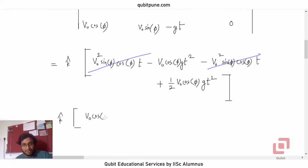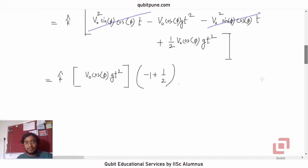This is negative V naught cos phi g t squared. So let us take V naught cos phi g t squared common. And it will be negative 1 plus 1 upon 2. But as far as the magnitude of the angular momentum is concerned, we have to consider only the positive part or the modulus part. So negative 1 plus 1 upon 2 is actually negative 1 upon 2. But because we take its mod, it will be V naught cos phi g t squared upon 2.